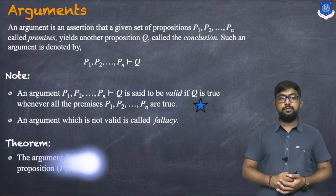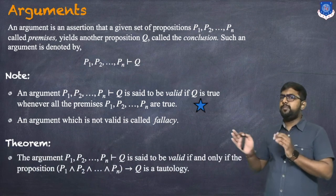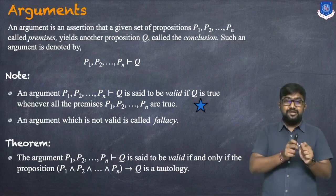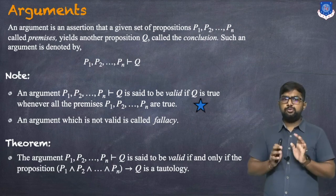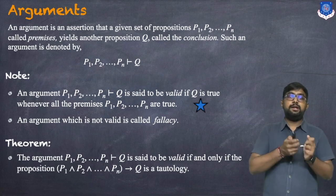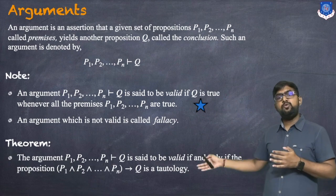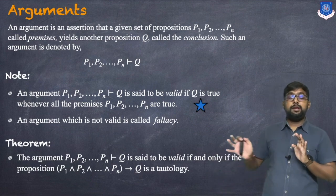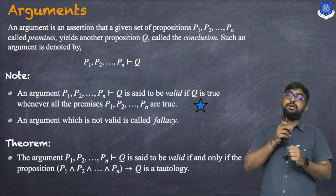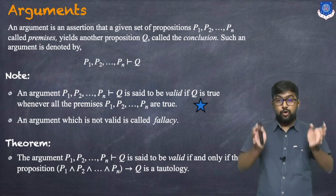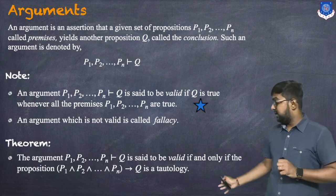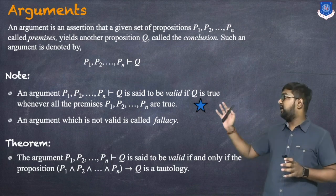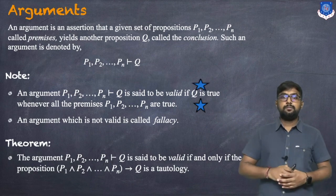Theorem: The argument p1, p2, ..., pn ⊢ Q is valid if and only if the proposition (p1 ∧ p2 ∧ ... ∧ pn) → Q is a tautology. We put AND between all the premises, and that whole conjunction implies the conclusion. If this is a tautology, then the argument is valid.